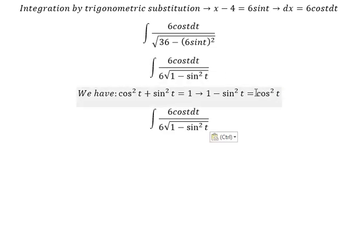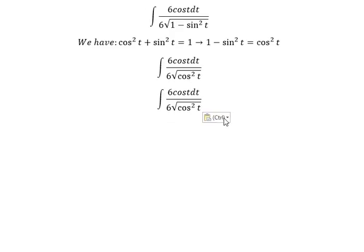We put this one in here. The square root of cosine t squared, you got cosine t. 6 cosine t divided by 6 cosine t, you got dt.